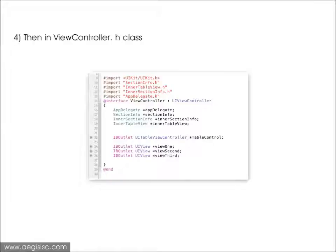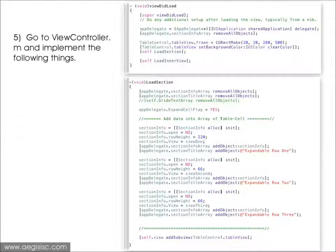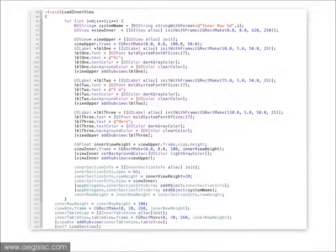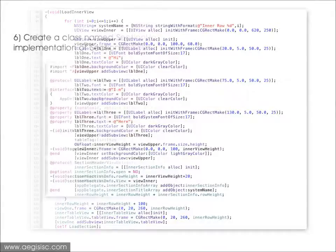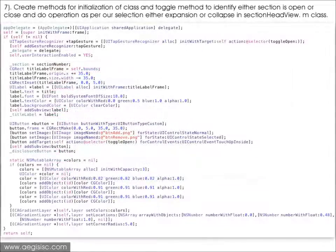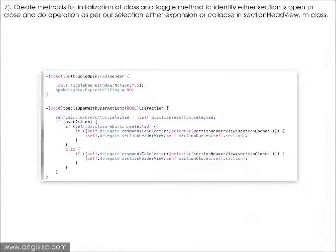Then in ViewController.h class, go to ViewController.m and implement these things. Now create a class named SectionHeaderView, subclass of UIView. See the given implementation of SectionHeaderView.h class. We are going to create methods for initialization of the class and a toggle method to identify whether a section is open or closed, and perform the operation for expansion or collapse in SectionHeaderView.m class.